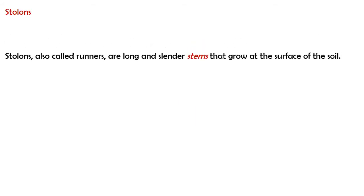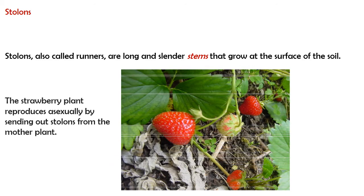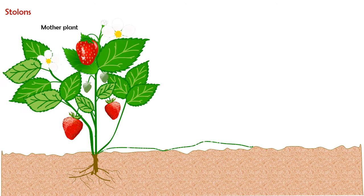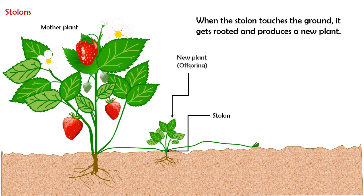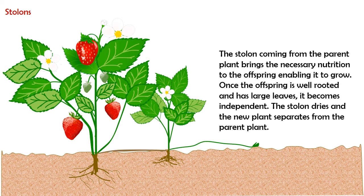Stolons, also called runners, are long and slender stems that grow at the surface of the soil. The strawberry plant reproduces asexually by sending out stolons from the mother plant. When the stolon touches the ground, it gets rooted and produces a new plant. The stolon coming from the parent plant brings the necessary nutrition to the offspring, enabling it to grow. Once the offspring is well rooted and has large leaves, it becomes independent, the stolon dries, and the new plant separates from the parent plant.